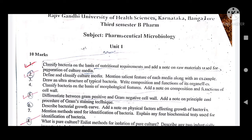The first question: classify bacteria on the basis of nutritional requirements, and add a note on raw materials used for the preparation of culture media. We have to classify the bacteria and write the raw materials used for culture media — nutrients, water — these are the basic raw materials you have to mention and write clearly.